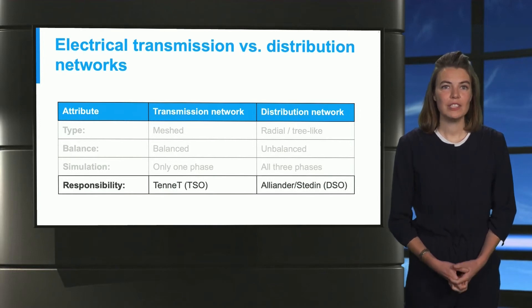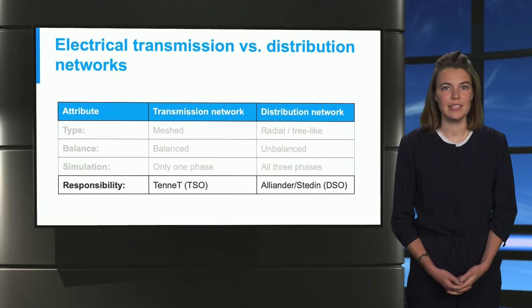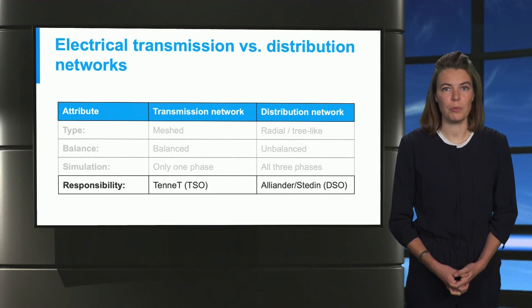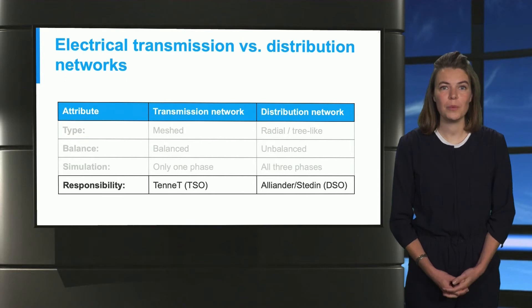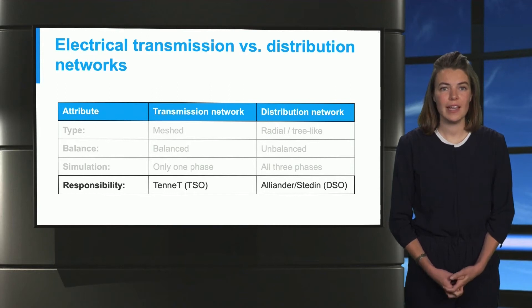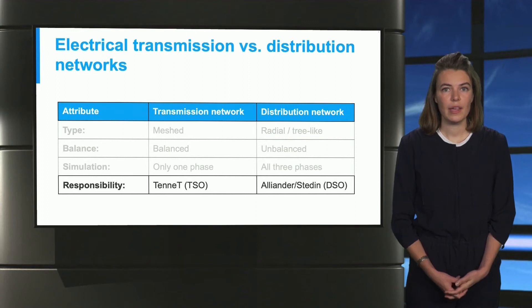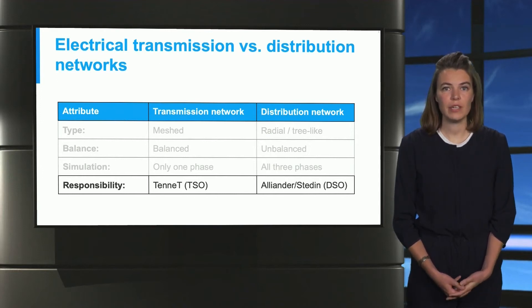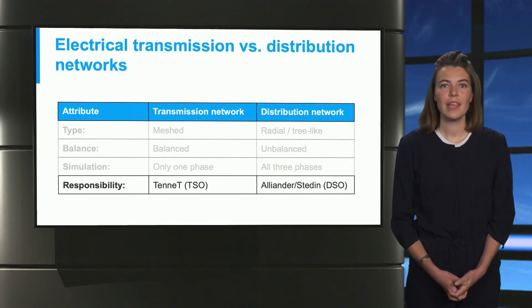The responsibility of these two separate networks lies with two different utilities. In the Netherlands, the transmission network is handled by only one transmission system operator, a TSO utility called Tenet. In contrast, the distribution network is the responsibility of different parties like Alander or Staden, also known as distribution system operators, or DSOs for short. It is to be noted that the TSO and DSOs operate separately, which can lead to problems such as limited information sharing due to privacy issues.